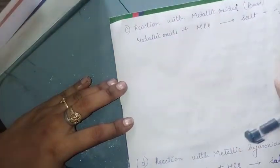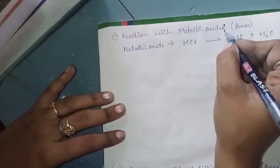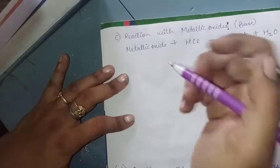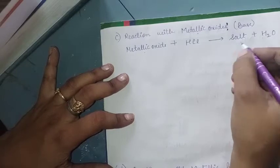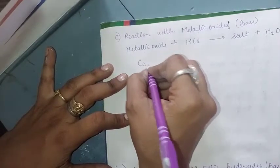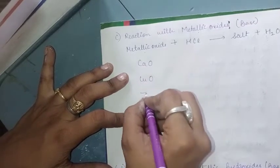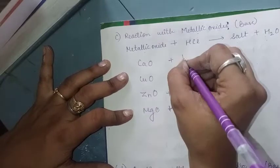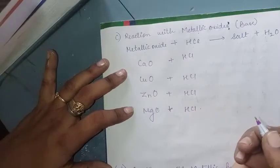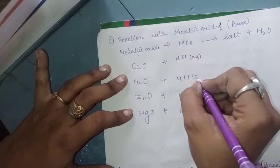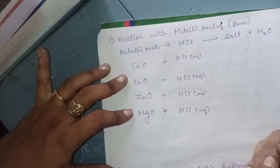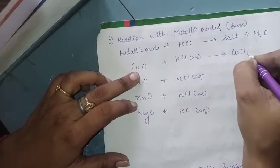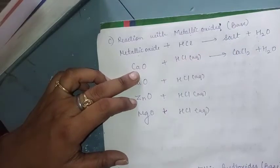The next reaction is with metallic oxides. Metallic oxide is actually a base because it contains the oxide group. The word equation is: metal oxide + hydrochloric acid → salt + water. Examples of metallic oxides we will study are calcium oxide, copper oxide, zinc oxide, and magnesium oxide, all treated with aqueous HCl solution.